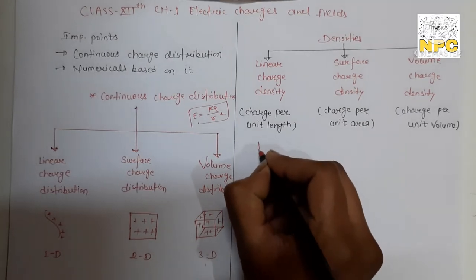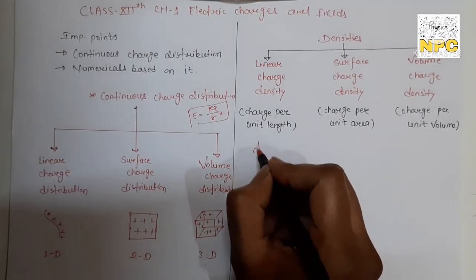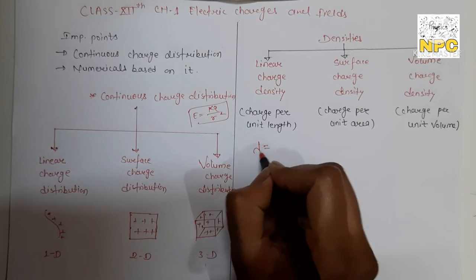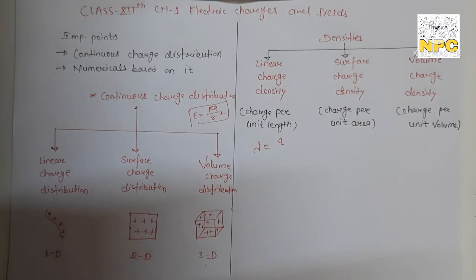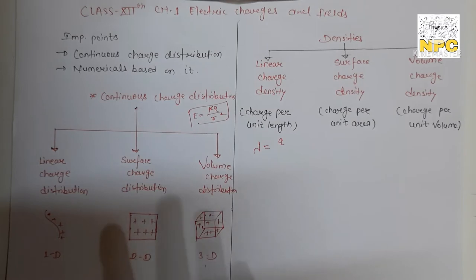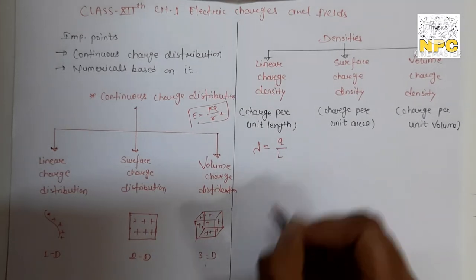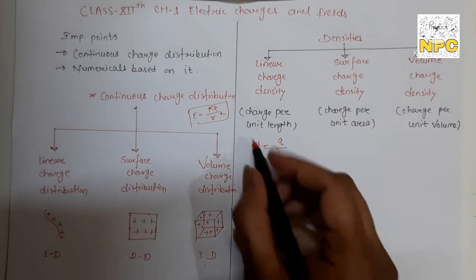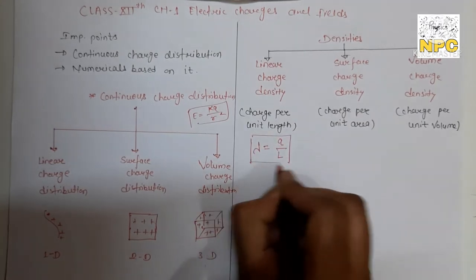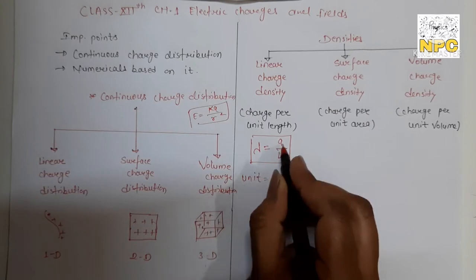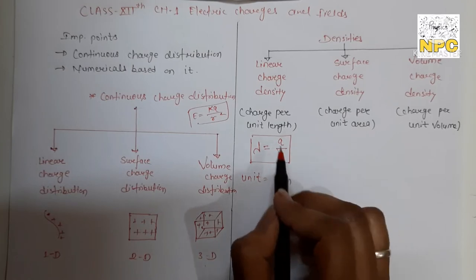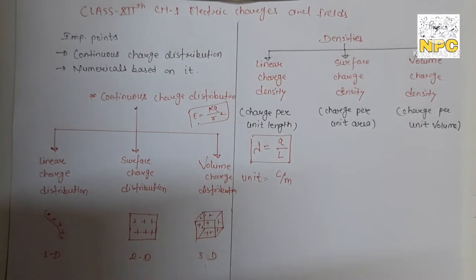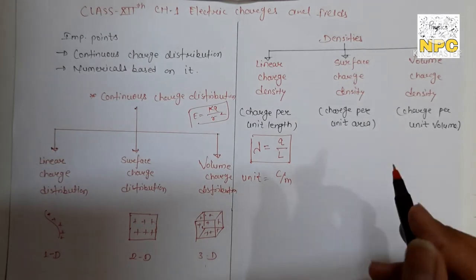Linear charge density is denoted by lambda (λ). It equals total charge on a given body - say a wire or rod - divided by total length. So λ = Q/L. The unit is charge in coulombs divided by length in meters, so the unit of linear charge density is coulombs per meter (C/m).